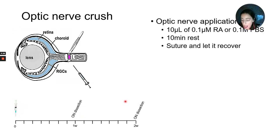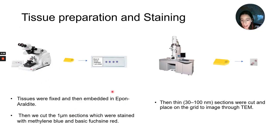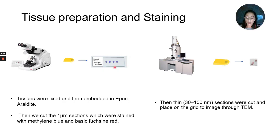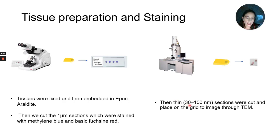Once the time has passed, we fix and embed the tissue in epon-araldite. We cut the tissue using an ultramicrotome into one-micron sections, and stain them with methylene blue and basic fuchsin red. Once we confirm we have reached the targeted area using light microscopy, we cut ultra-thin sections between 30 and 100 nanometers and place them on a grid for evaluation in transmission electron microscopy.